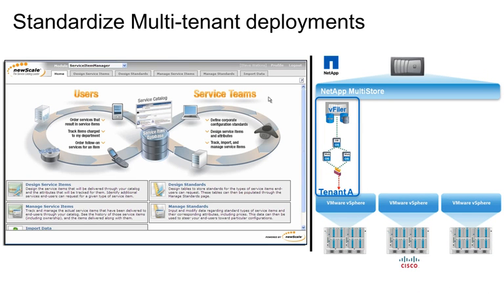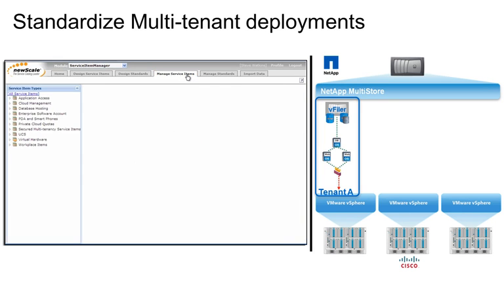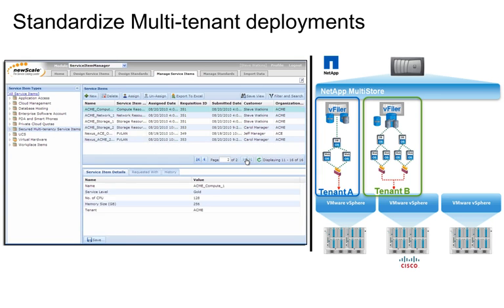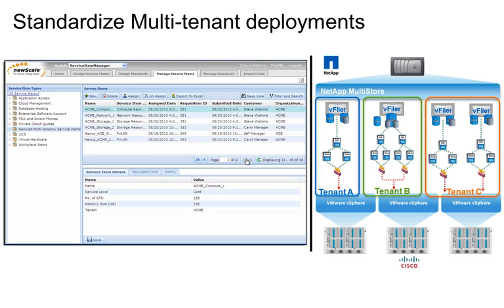And while Janice can see all the service items for her specific tenant, Steve, the cloud administrator, can see all service items for all tenants by clicking on Manage Service Items. Here, he has a view of all the individual layers for all of the organizational units, aka tenants, in his organization. We see a tenant for ACE as well as the tenant named ACME that Carol ordered a service for earlier. Steve can also group the resources by secure multi-tenancy layer.